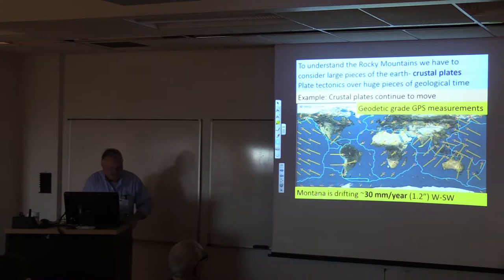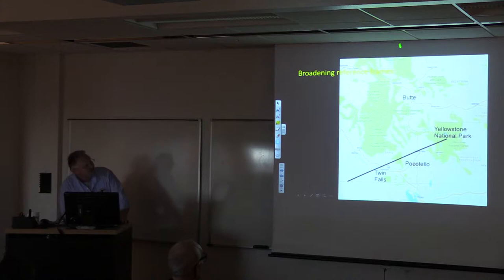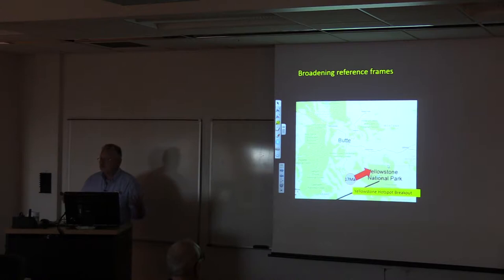Montana is drifting about 30 millimeters a year, about 1.2 inches west-southwest. In terms of broadening perspective, if we look at Yellowstone Park, it's thought that the Yellowstone hotspot broke out first down here near Twin Falls about 17 million years ago. What actually happened was North America drifted that way over a fairly stationary hotspot.